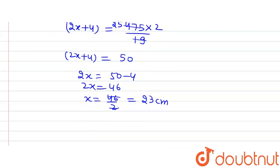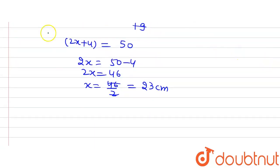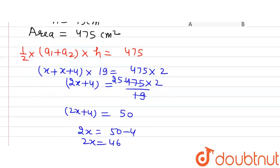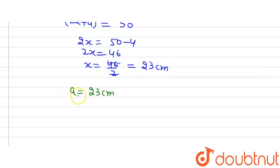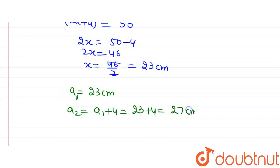This is the length of one of the parallel sides. So a1 equals 23 centimeters. The other parallel side a2 equals x plus 4, that is 23 plus 4, which equals 27 centimeters. So these are the lengths of the two parallel sides of the trapezium that we were supposed to find. Thank you, that's all.